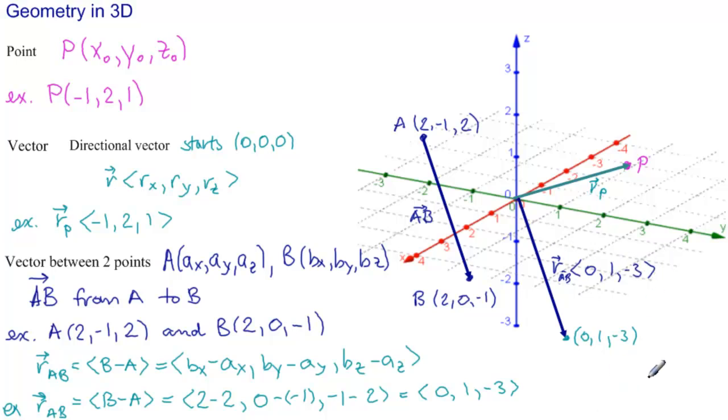So these are our two basic entities, a point and a vector. And we have two kinds of vectors, a directional vector and a vector between two points.